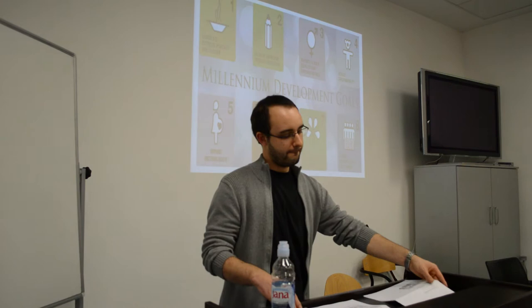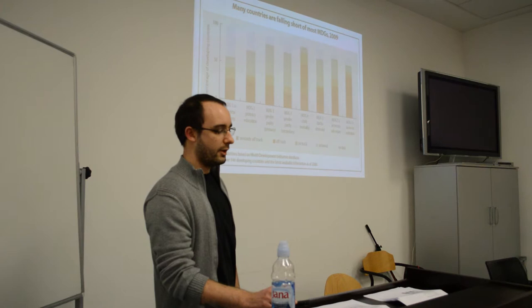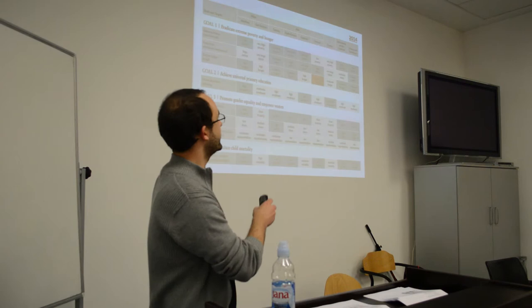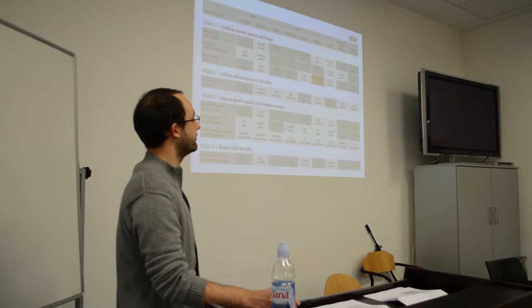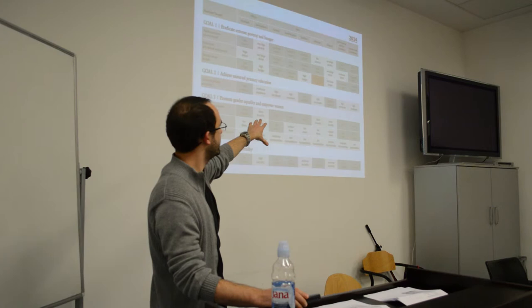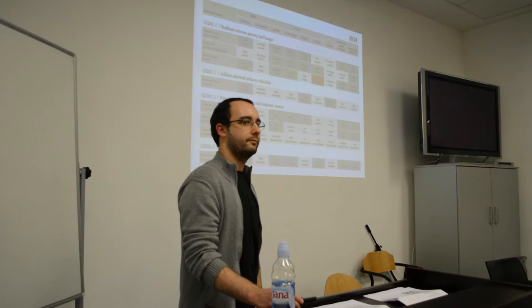Did this project succeed? Already in 2009, there were certain problems: many countries were falling short of most of the subscribed goals. The situation improved by 2014, which represents the last available data since the whole project ends next year. The red boxes indicate areas where the least success has been achieved; the green ones are on track; and everything in between has not been fulfilled. As you can see, there is still a lot of work to be done.